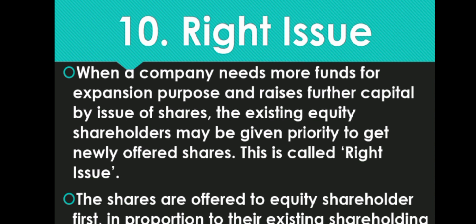The shares are offered to existing equity shareholders first, in proportion to their existing shareholding — just like bonus shares, right issue shares are distributed proportionally, e.g., 2:1 or 1:1. However, unlike bonus shares which are free of cost, right issue shares are not free — shareholders have to pay money to buy these shares.